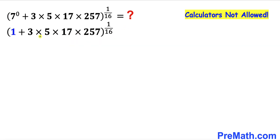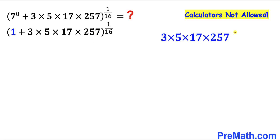Now here's our next step. Let's focus on this part: 3 times 5 times 17 times 257. Since we are not supposed to be using calculators, let's go ahead and manipulate these numbers.